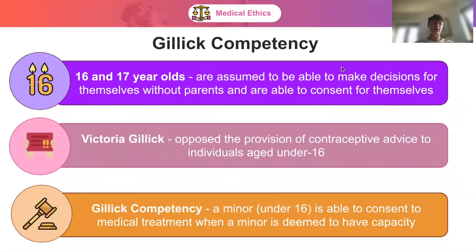In the court case Gillick versus West Norfolk and Wisbech Area Health Authority, it was decided that a minor — anyone under 16 — is able to consent to medical treatment when deemed to have capacity. So the four checklist points from the Mental Capacity Act of 2005 also apply to minors under 16. If a physician thinks that a minor has capacity, they should be able to consent to medical treatment. This is called Gillick Competency.